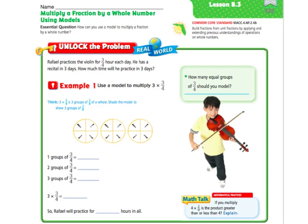Okay, so we already learned in 8.1 and 8.2 how to multiply fractions by a whole number. This is just taking it one step further and drawing pictures to match that. So we have the problem here, 3 times 3 fourths. Let me read the whole word problem, though.